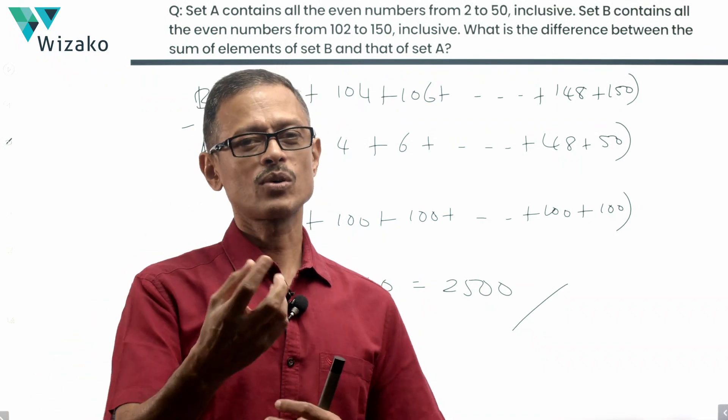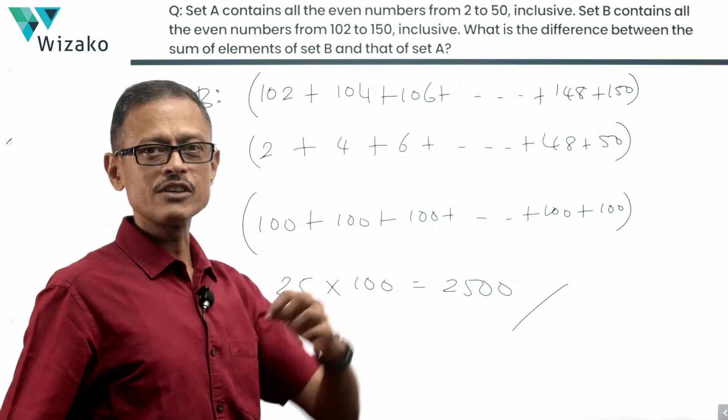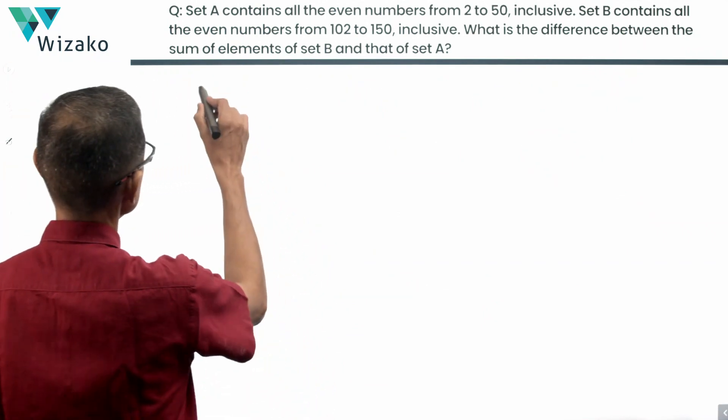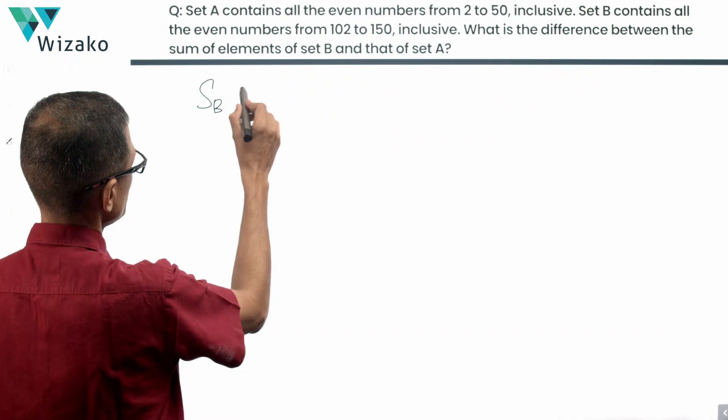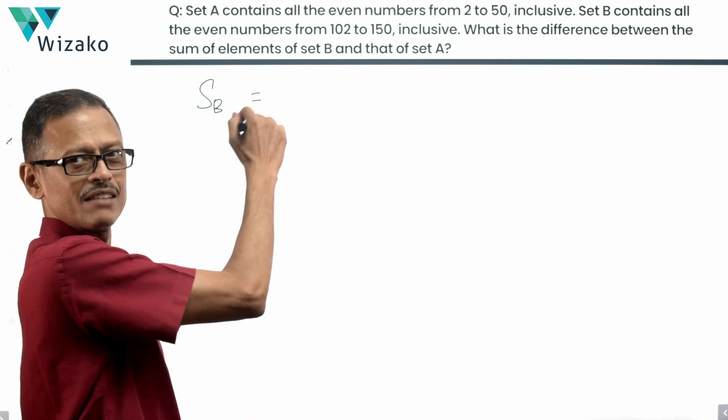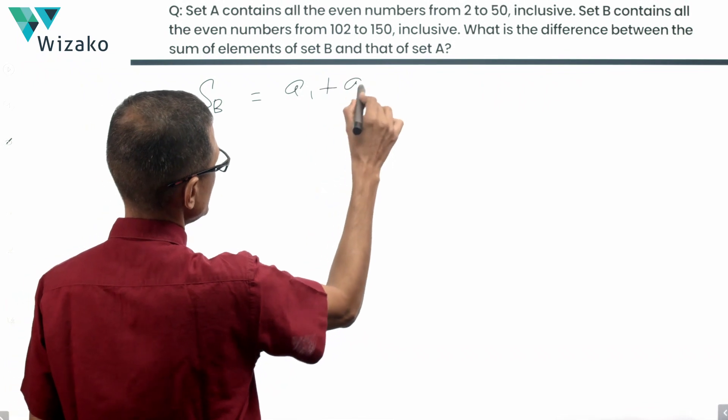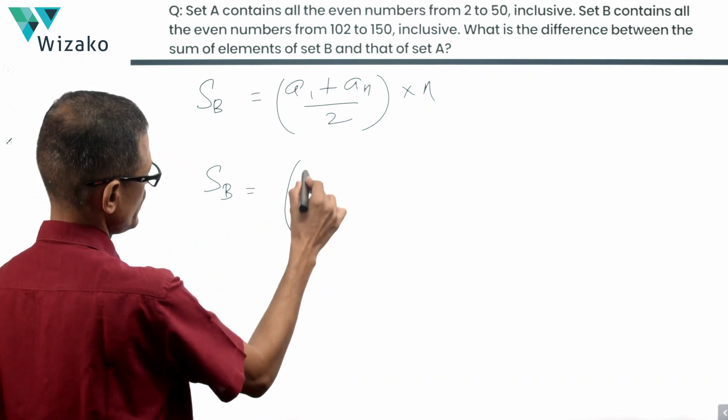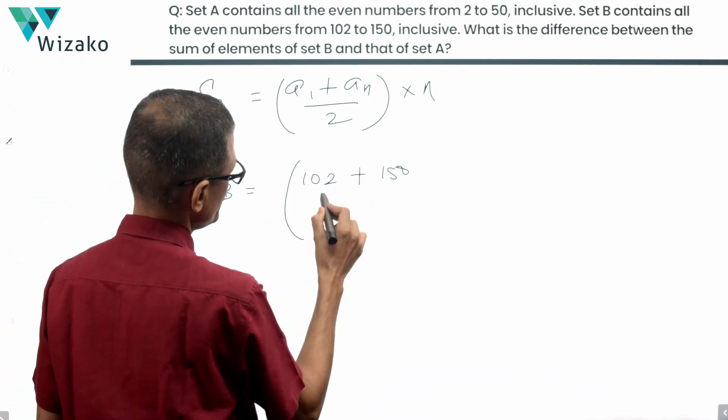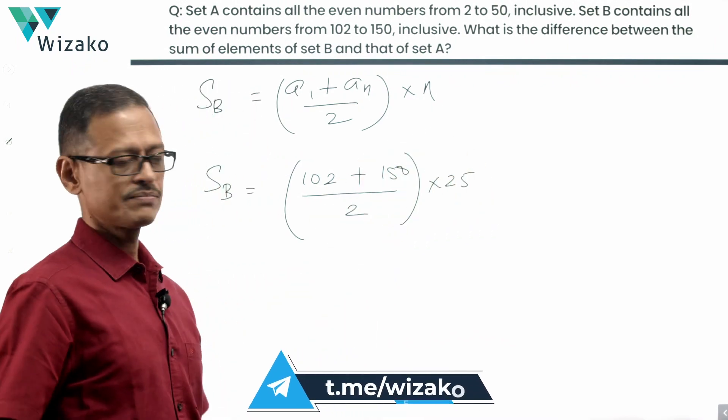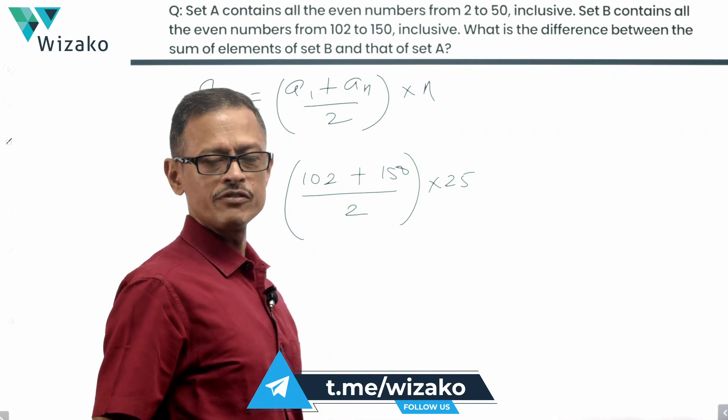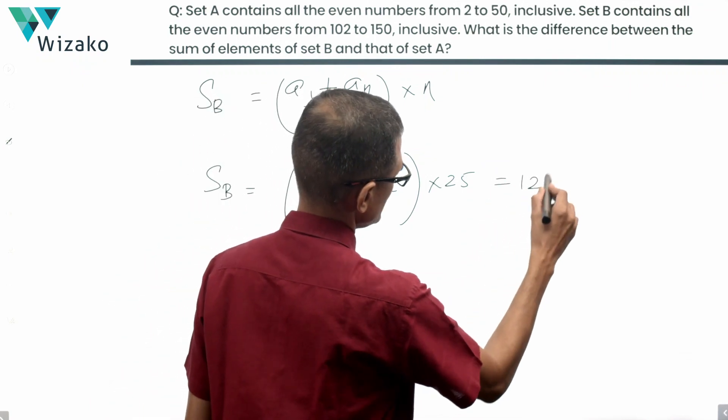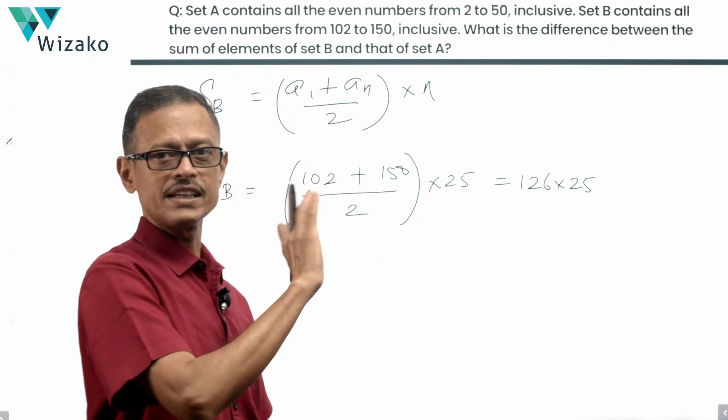Otherwise 650 level, because it's going to take you some more time computing this sum and then finding the difference, which is going to be calculation-based cumbersome. We will nevertheless do it. We will start with sum of elements of set B. Sum of an arithmetic progression is essentially equal to A1 plus An divided by 2 times the number of terms. So for set B, it is going to be equal to the first term 102, the last term is 150 divided by 2 into number of terms which is 25. 102 plus 150 is 252. 252 divided by 2 is 126. This is 126 into 25. We will do the calculation subsequently.